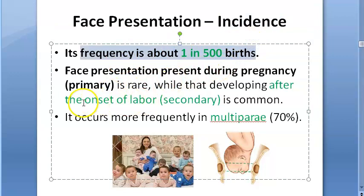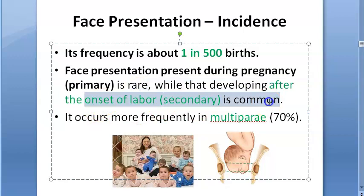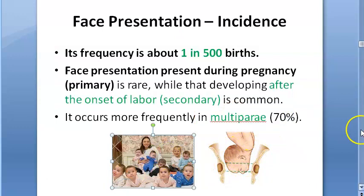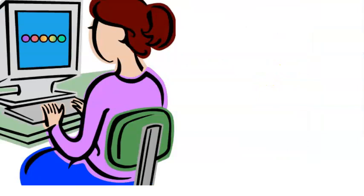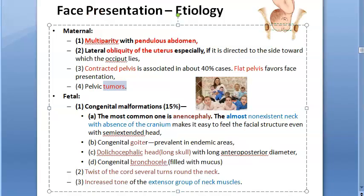The incidence of face presentation is 1 in 500 births. It happens - especially after the onset of labor you will usually notice it. In multiparous women it is more common. Maternal causes include multiparity with pendulous abdomen, lateral obliquity of the uterus, contracted pelvis, flat pelvis, and pelvic tumors, which will make the baby present its face out.